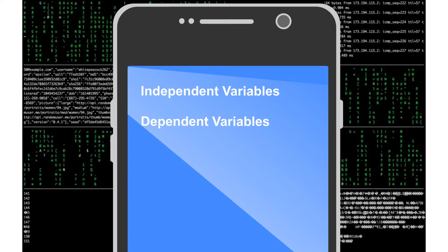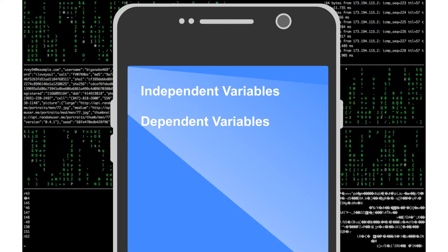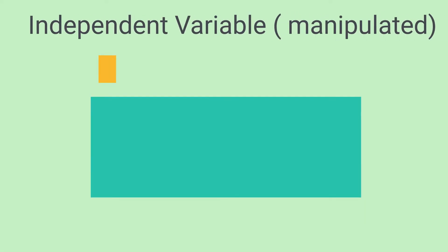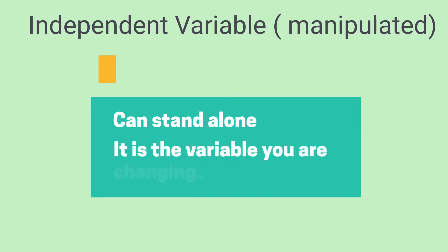An independent variable, which is also sometimes called the manipulated variable, has the ability to stand alone. It is the variable you are changing or manipulating. In simple terms, you change the independent variable.